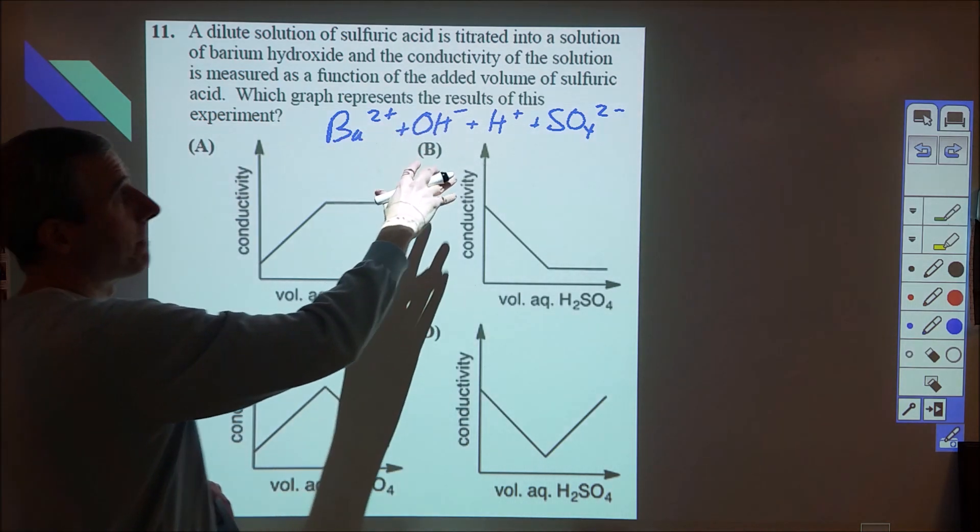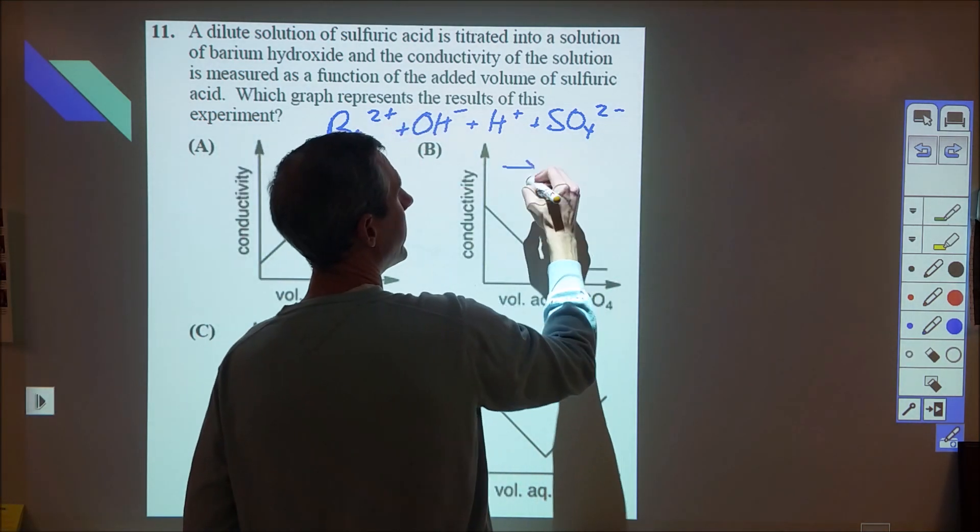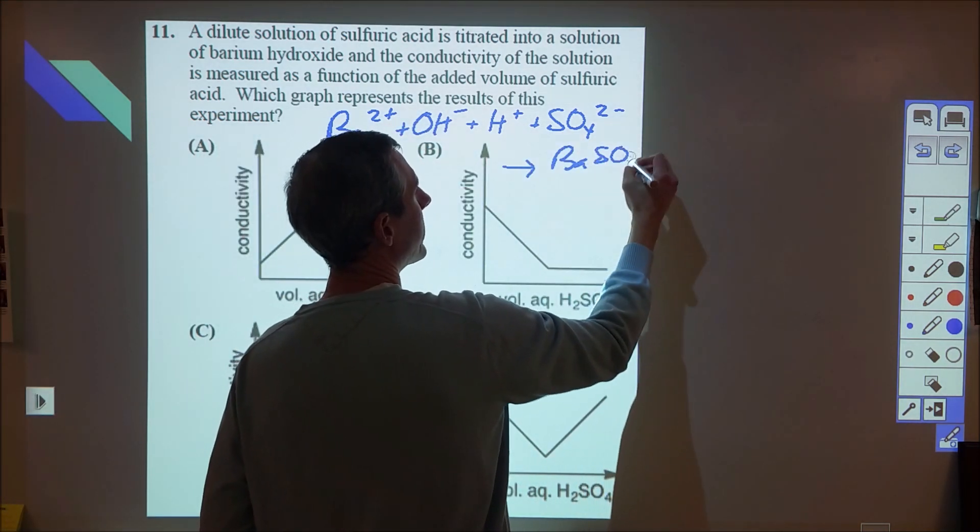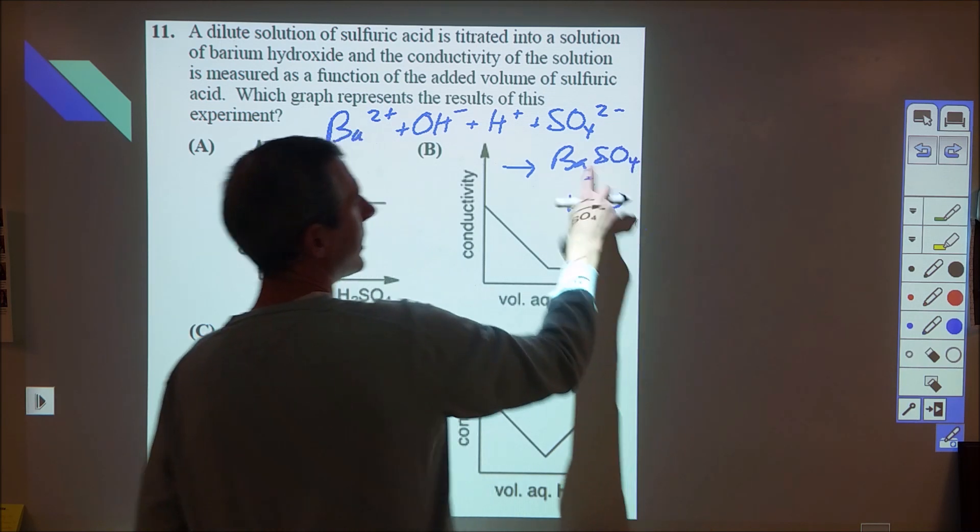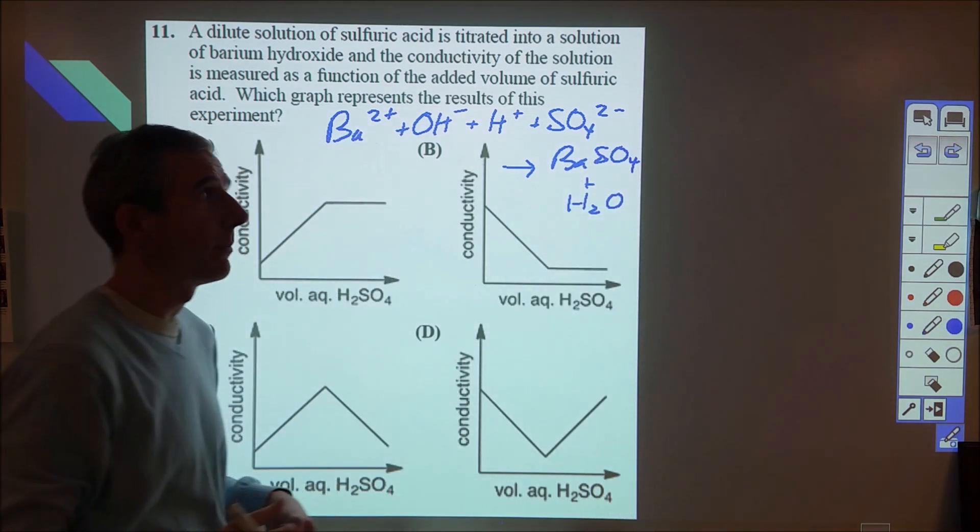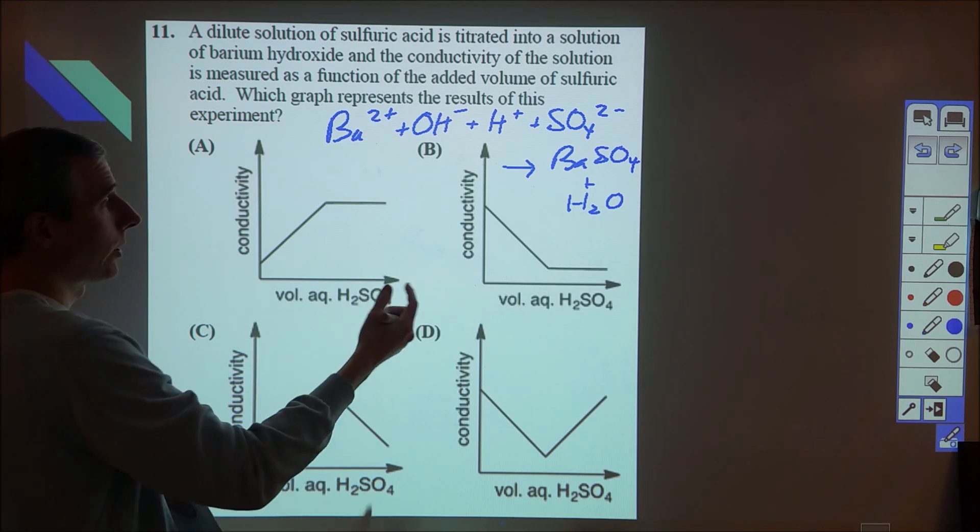We have four different ions, but as they mix what we end up forming is barium sulfate precipitate and water, neither of which is going to conduct except for a very minimal amount of the barium sulfate that will dissolve according to its KSP.